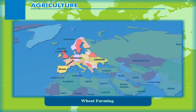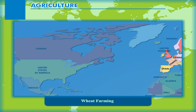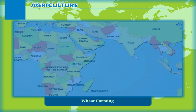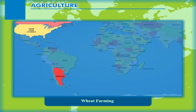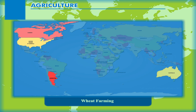Most of the wheat produced in European countries is consumed within the region. Hence, more of these countries import wheat. USA, Canada, Australia and Argentina are the main exporters of wheat. They share three-fourths of the total sale of wheat in the international market. Europe is the major buyer of wheat.